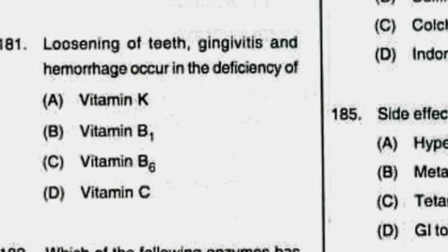Question number 181: loosening of teeth, gingivitis, and hemorrhage occur in the deficiency of which of the following? Option A: vitamin K, B: vitamin B1, C: vitamin B6, D: vitamin C. The correct answer is option D, vitamin C. Vitamin C deficiency results in scurvy.